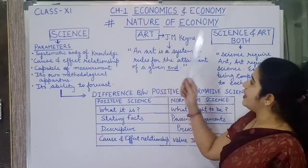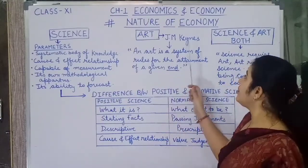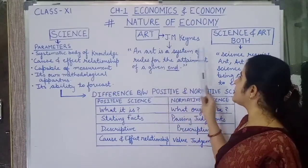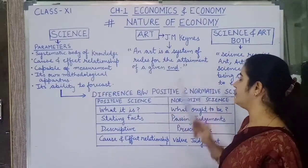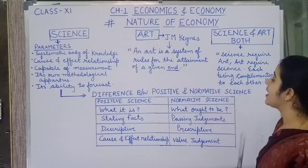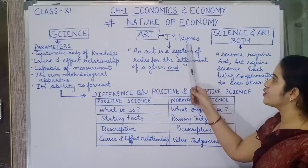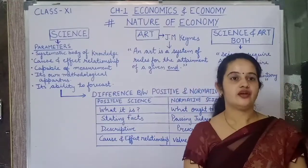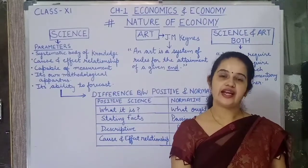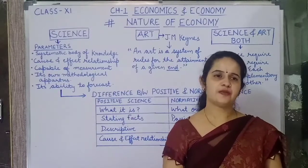Now let's see whether economics is an art or not. Before I proceed, I want to discuss a renowned economist's definition — J.M. Keynes' definition. An art is a system of rules for the attainment of a given end. Here the word 'end' means the result or the target. So according to Keynes, a system of rules for the attainment of a given target is called an art. Basically, art means nothing but the practice of knowledge. Science teaches us how things work, whereas art teaches us to do.